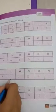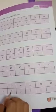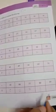42 is 6 times, 49 is 7 times, 56 is 8 times, 63 is 9 times, 70 is 10 times. 55 is 5 times, 6, 7, 8, 9.